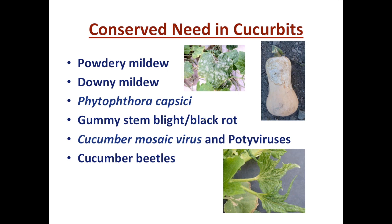Gummy stem blight and black rot are two disease names for the same pathogen. Black rot describes symptoms appearing in the storage stage of winter squash, while gummy stem blight refers to that same pathogen having different symptoms in growing plant tissue. Some viruses — particularly cucumber mosaic virus and potyviruses in the U.S. — can cause very pronounced leaf curl symptoms, fruit disfigurement, and other losses. Cucumber beetles are also a ubiquitous pest we have to deal with in all cucurbits.